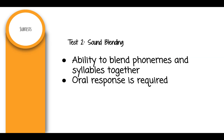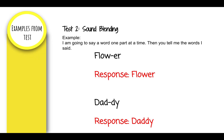Test 2: Sound Blending. This subtest measures the ability to blend phonemes and syllables together. An oral response is required. For example, you would say, 'I am going to say a word one part at a time. Then you tell me the word that I said.' You would pronounce the word 'flower' in parts, and the child would respond 'flower.' Another example is 'daddy,' and the child would respond 'daddy.'